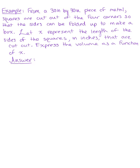From a 30 inch by 30 inch piece of metal, squares are cut out of the four corners so that the sides can be folded up to make a box. Let x represent the length of the sides of the squares in inches that are cut out. Express the volume as a function of x.